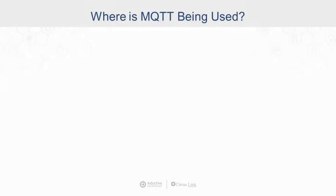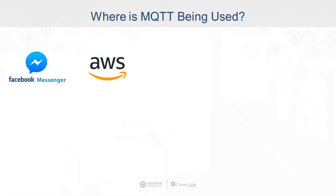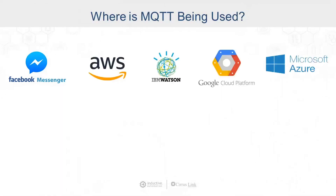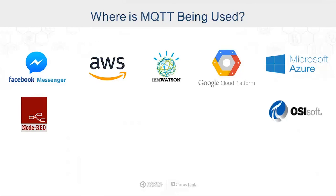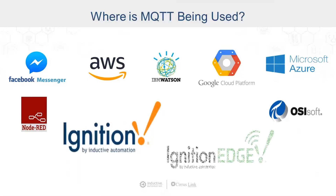Where is MQTT being used? It's been around since 1999 and IBM had it in many of their products. One of the first major adoptions was by Facebook Messenger, who were looking for a more efficient, more reliable, more simple protocol. That blossomed into cloud service providers offering native MQTT connectivity, tools like Node-RED, and historians like OSIsoft providing MQTT connectors. For the focus of this talk, we'll look at how Ignition and Ignition Edge can leverage MQTT technology.